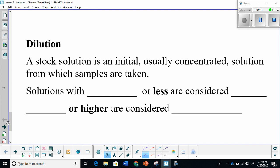Let's get into what a dilution is. Basically, a stock solution is your initial solution. So this is something that's been provided in the lab. It's usually very concentrated, and it's a solution from which samples are taken from. Solutions that have a concentration of 0.1 mole per liter or less are considered to be dilute, very dilute. So that's a small, small concentration.